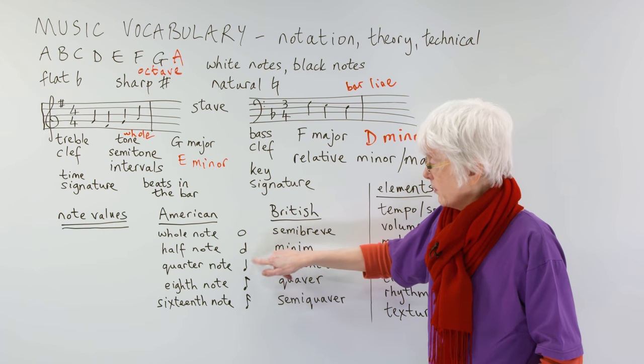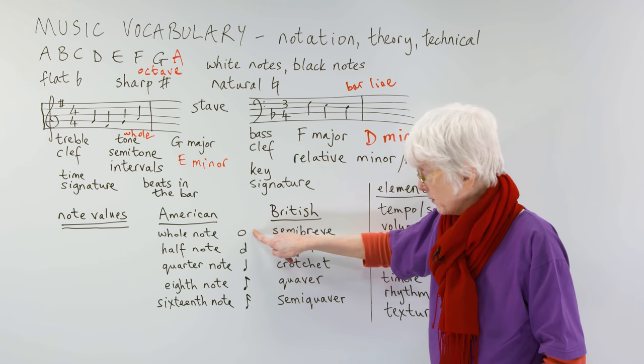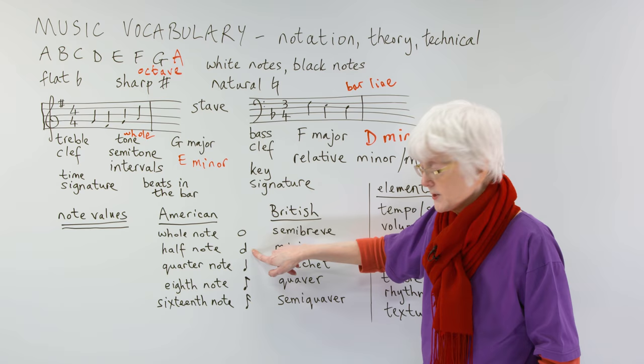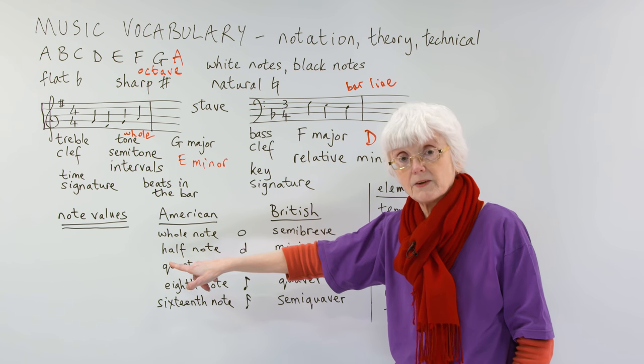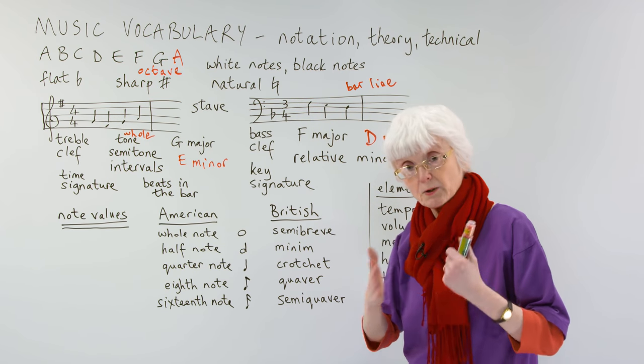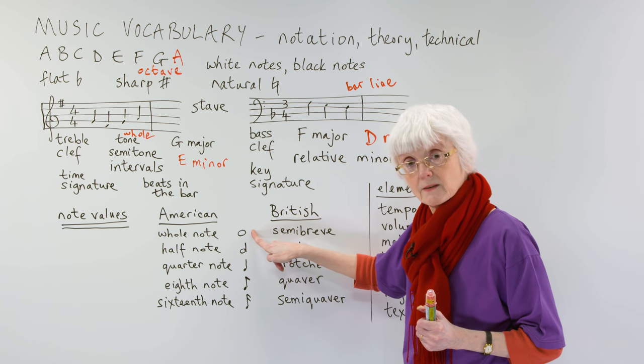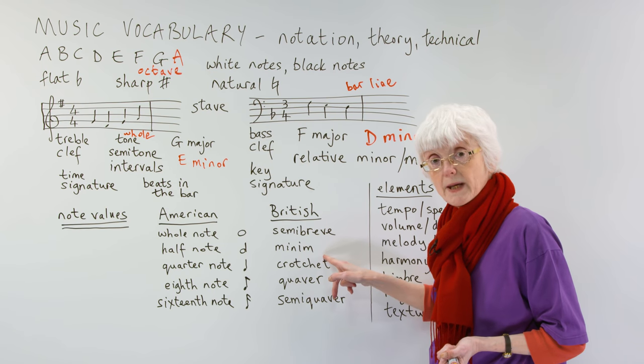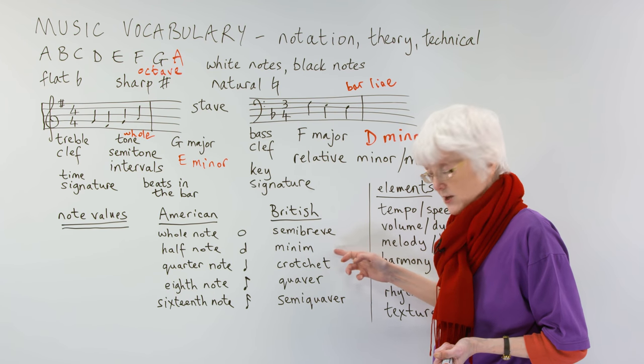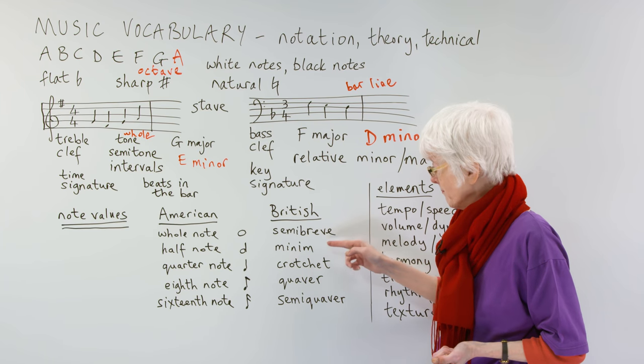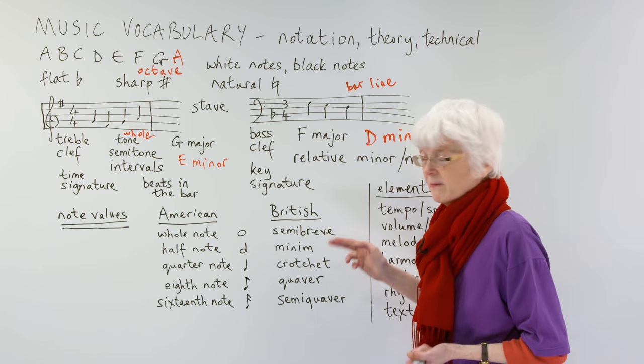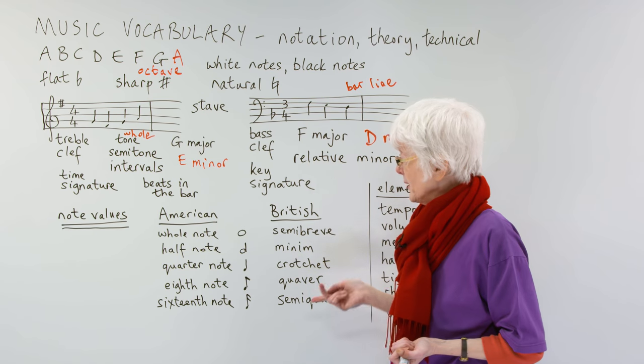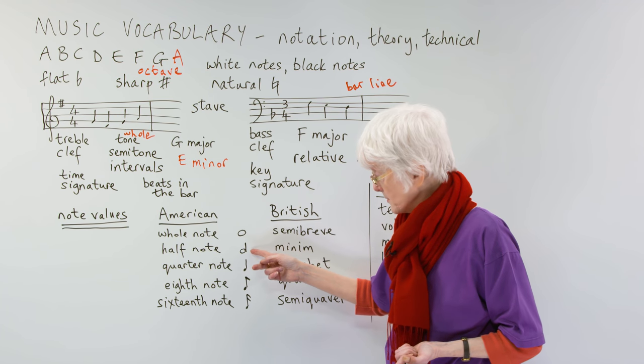So this one, without a stick on it, a white note without a stick, is called a whole note in America, but it's called a semi-breve in British music, in the UK. This one, a white note with a stick, half the length of that one is a half note, so that's a whole note, so this one is half the length, so it's logical that the American system calls it a half note because it's half the length of the one there, so a half note, but in British music it's called a minim.